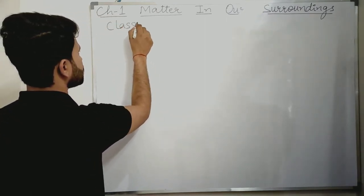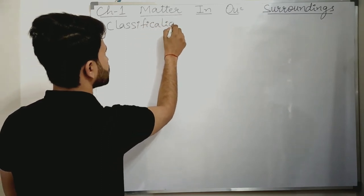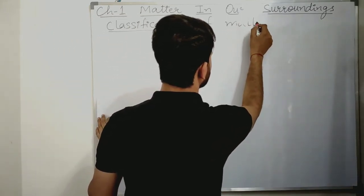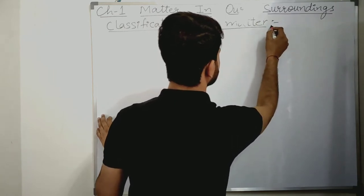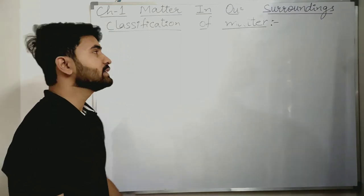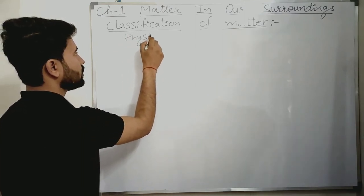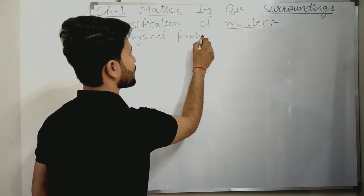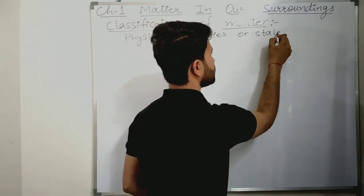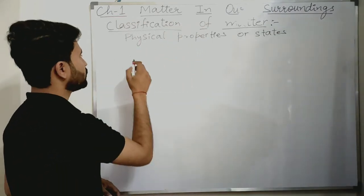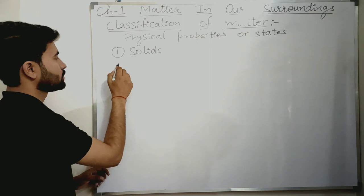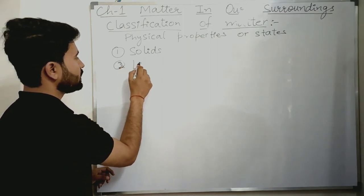Now let us start our next topic, that is classification of matter. On the basis of physical properties or physical states, matter can be classified into three types: solids, liquids, and gases.